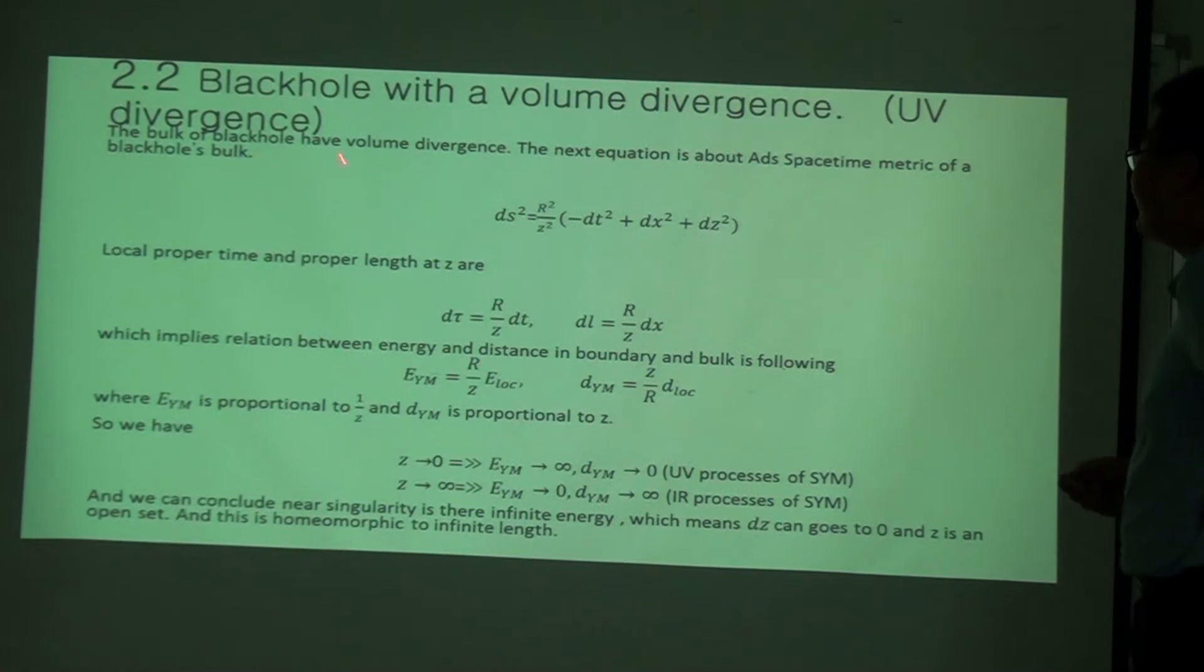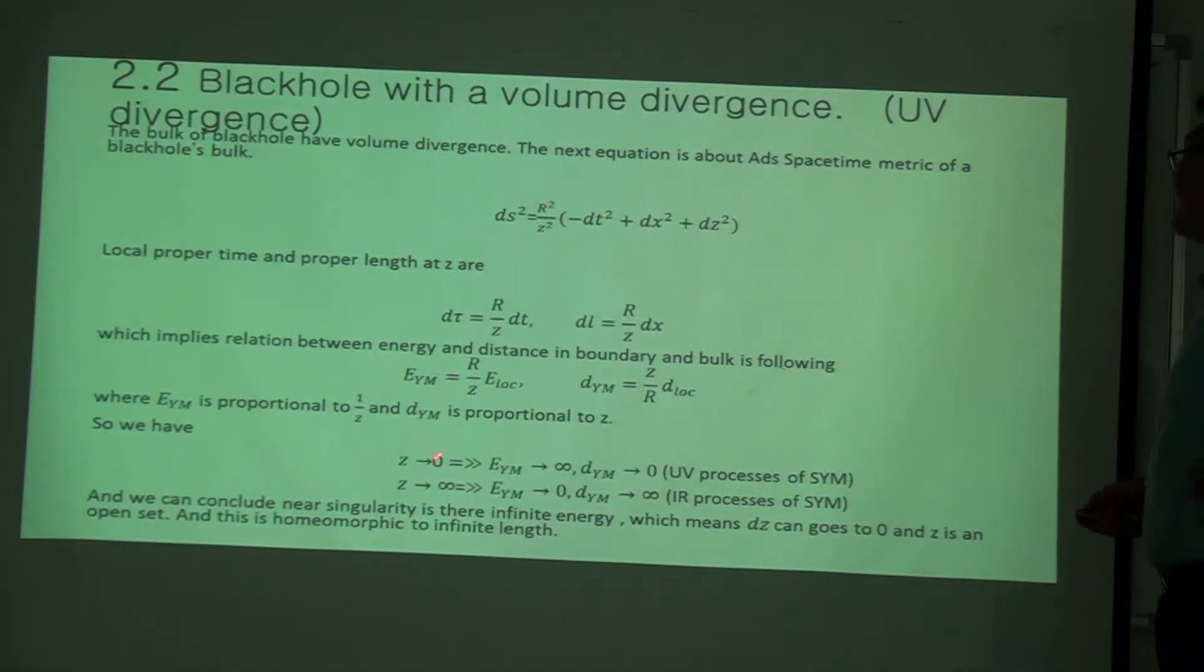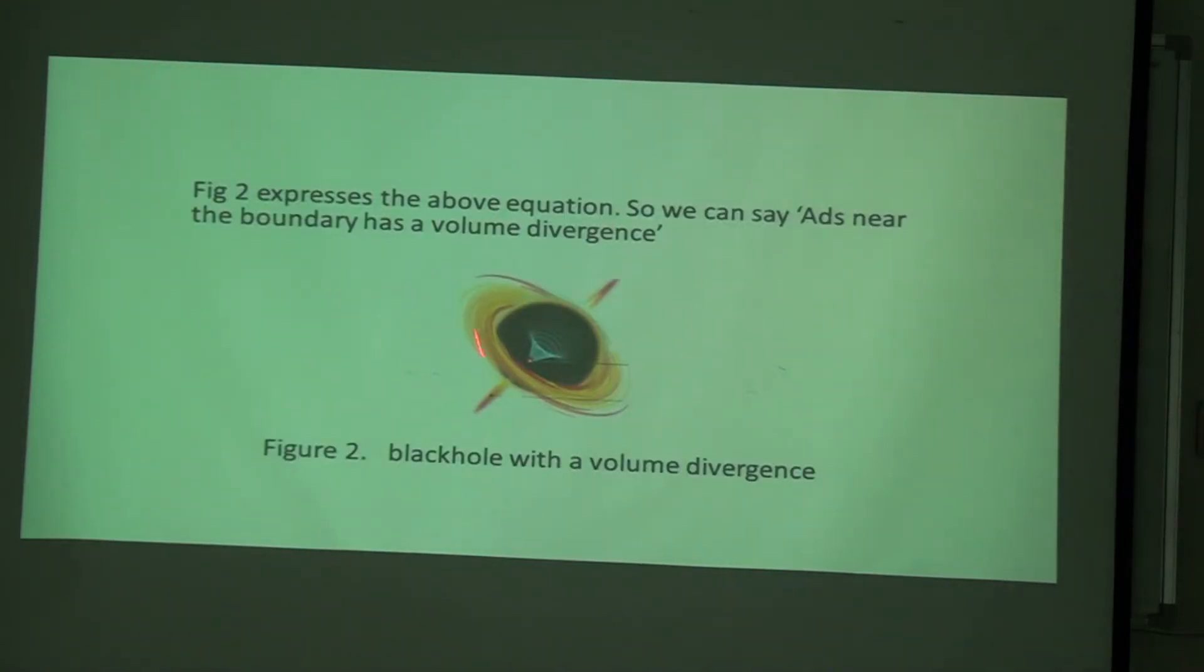And another one, UV-divergence. As I said, the black hole should have UV-divergence, which is seen from inside, observed from inside. As D goes to zero and Z goes to infinity, the ambient energy goes to infinite and the ambient distance goes to zero. And when Z goes to infinity, the ambient energy goes to zero and the ambient distance goes to infinite. This is why it has UV divergence. This is the picture explaining about that.